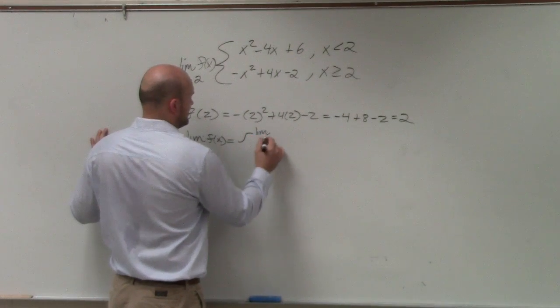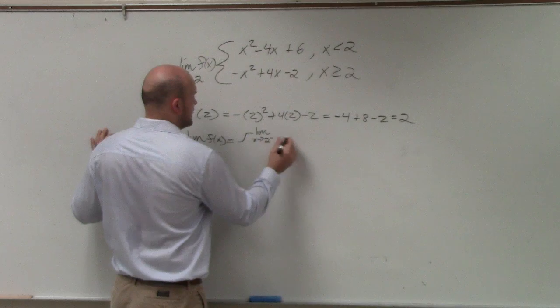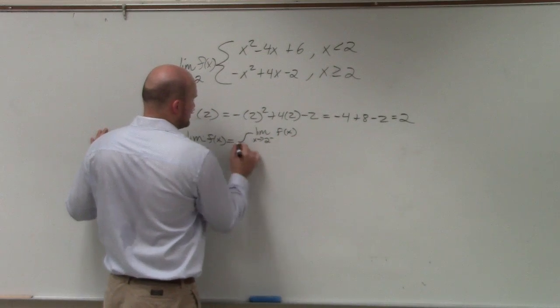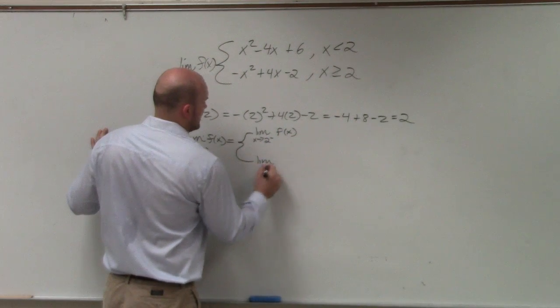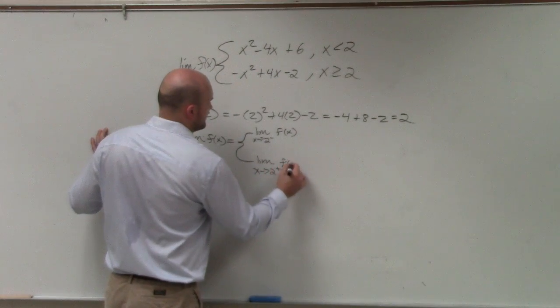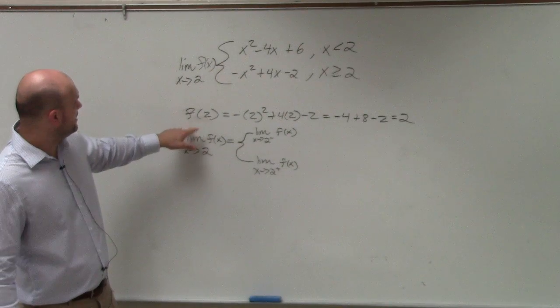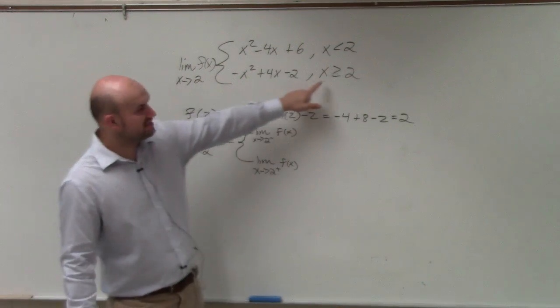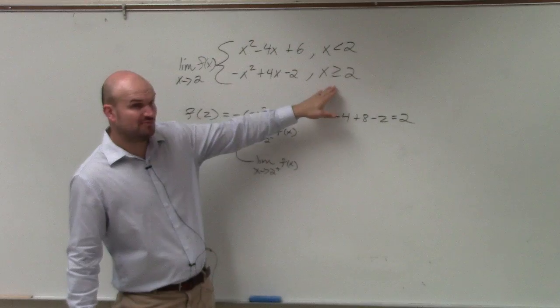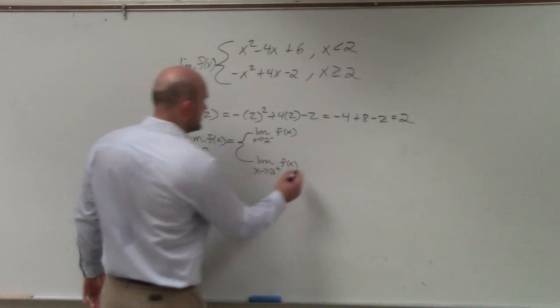So I'm going to do limit as x approaches 2 from the negative of f(x) and limit as x approaches 2 from the positive of f(x). We know as 2 approaches from the right, those are values to the right. So from the right, it equals 2.